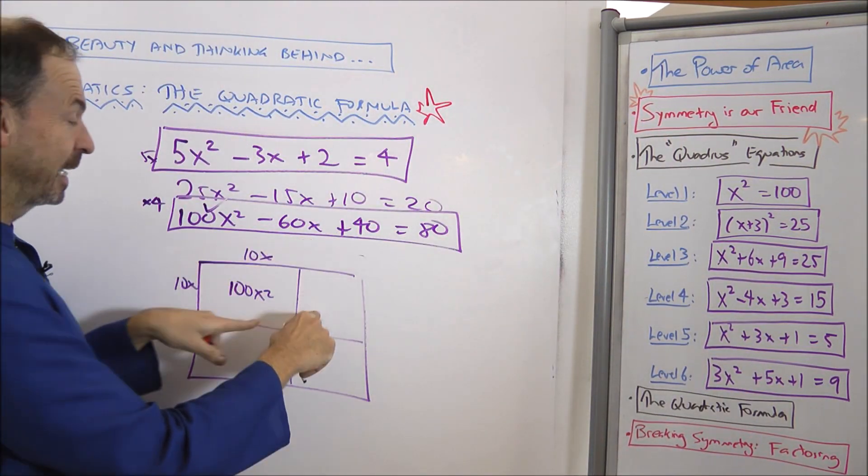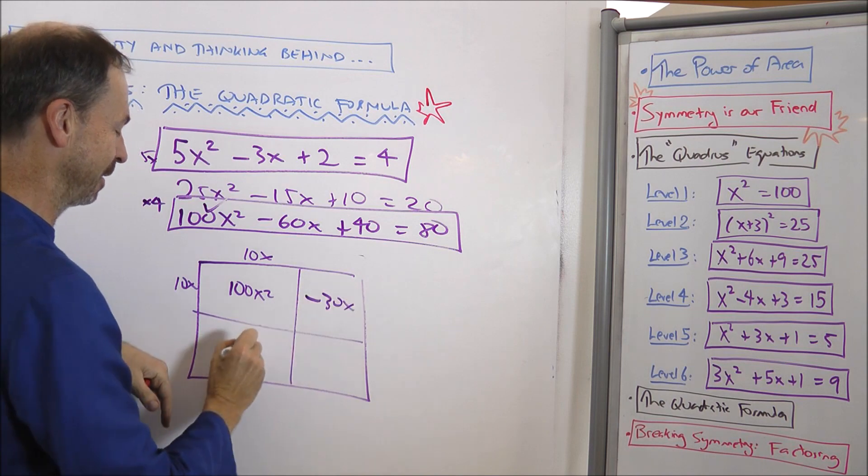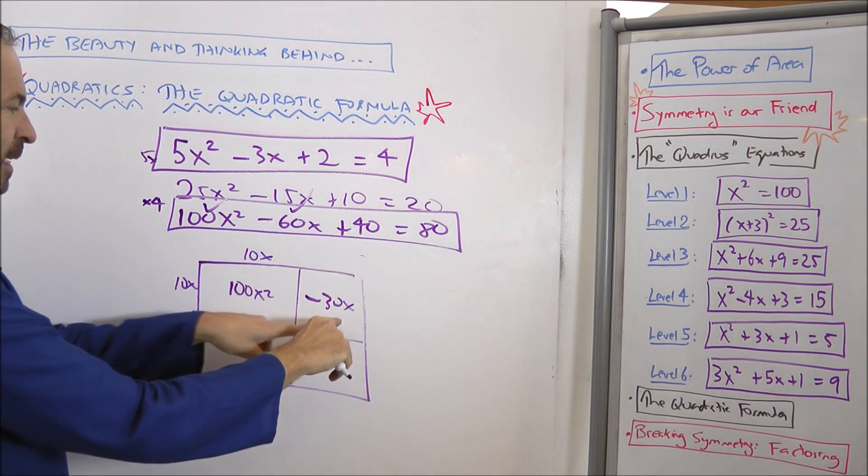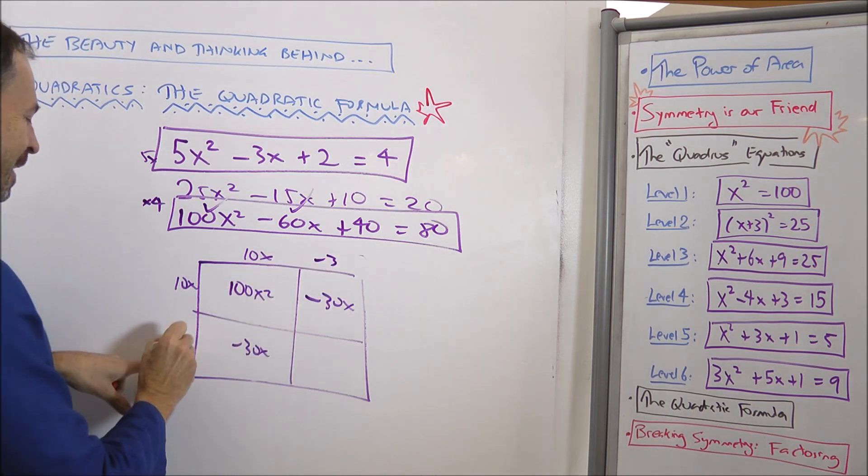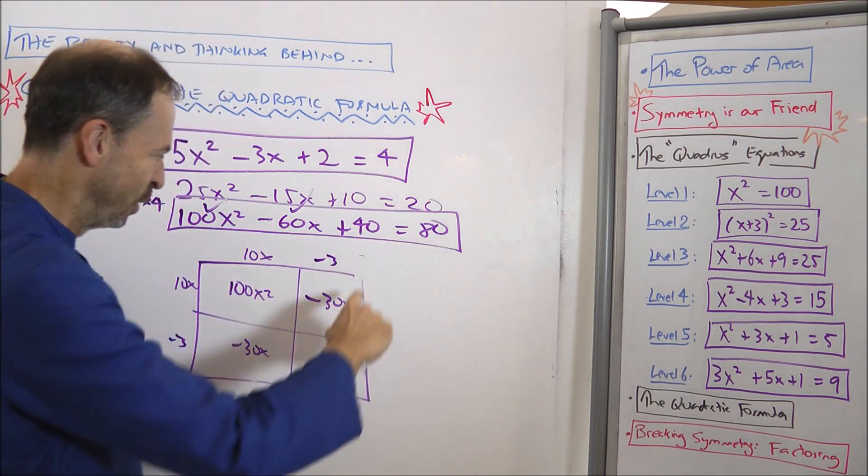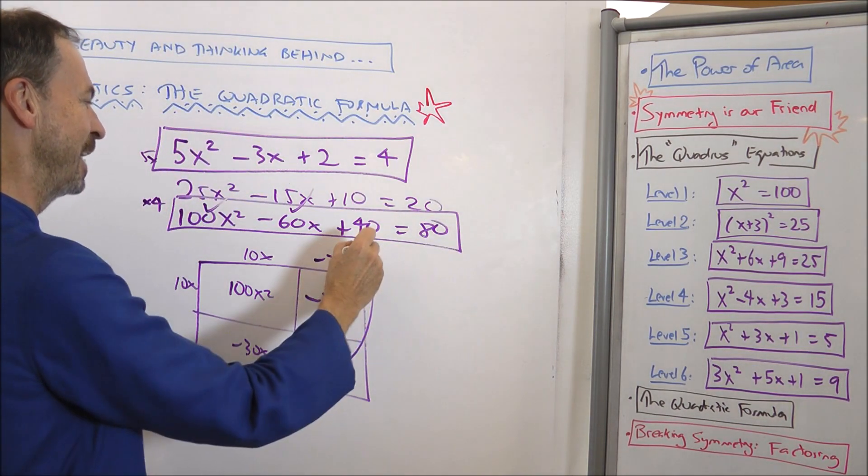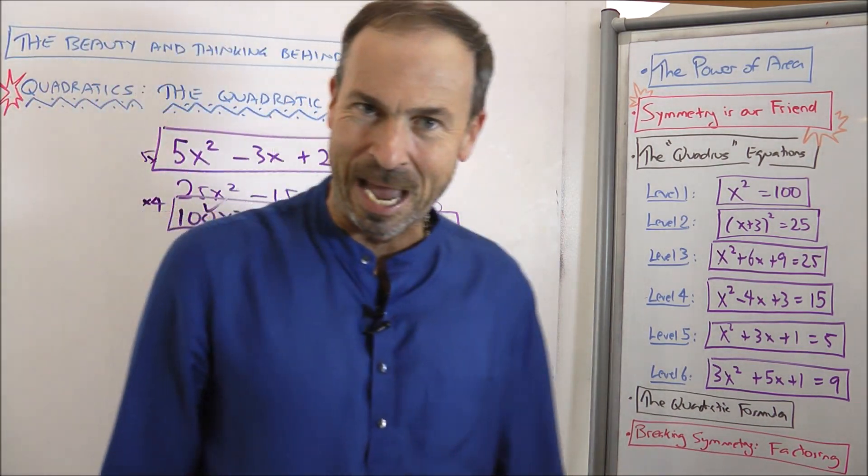Keeping the numbers friendly for my poor hard brain here. All right, 10x and 10x is that piece. Done. Minus 60x. Keep it symmetrical. Minus 30x. Minus 30x. Done.